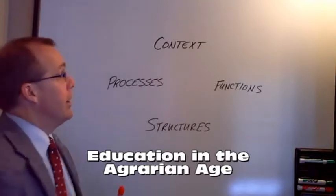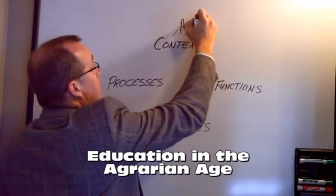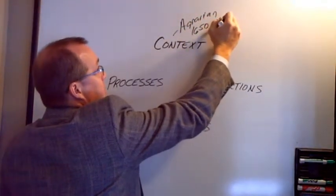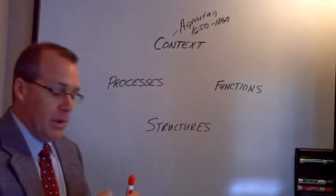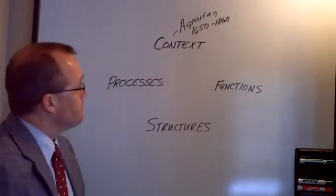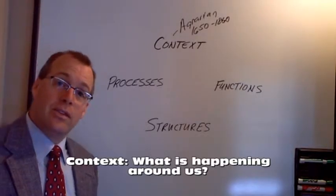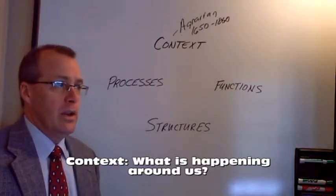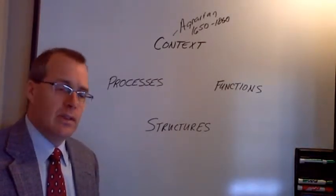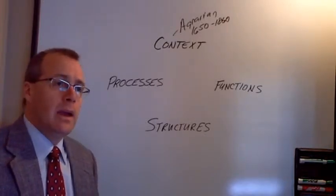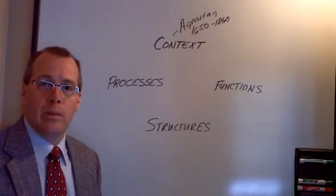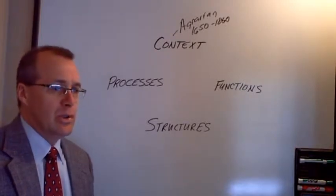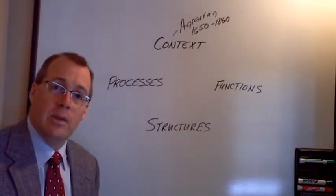The first is agrarian America. So the context, agrarian 1650 to about 1860-ish. America was an agrarian economy, an agrarian nation. The issue, the context that we faced at that time, we were trying to settle the West. We had lots of people. We needed artisans and craftsmen, wheelmakers, blacksmiths, carpenters to help us build our country. And we needed to retain our republic. Our republic was fragile. So we needed learned people who could continue to push our democracy forward and help define that and keep it alive.